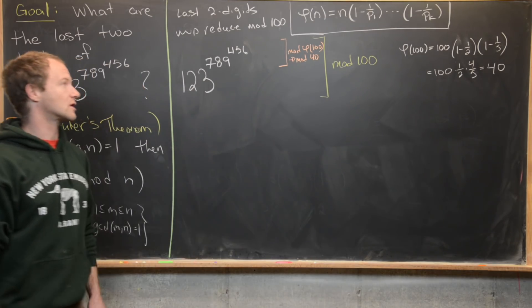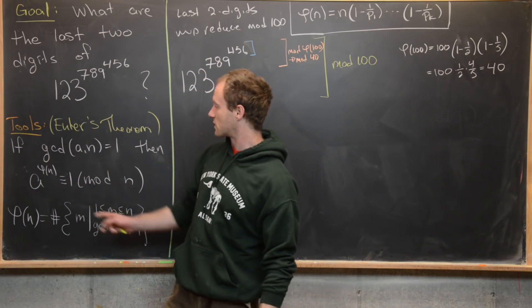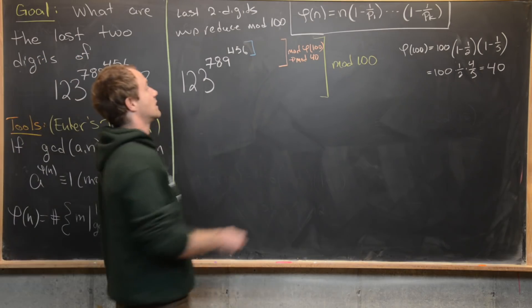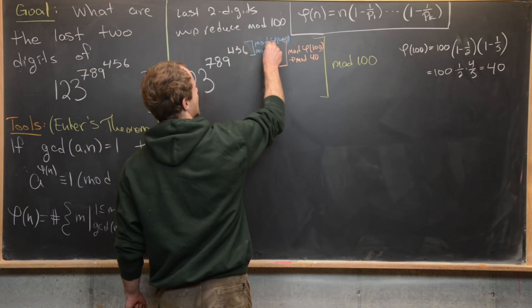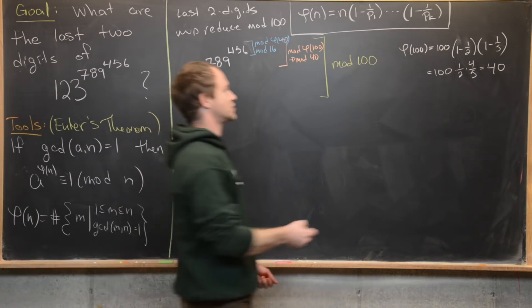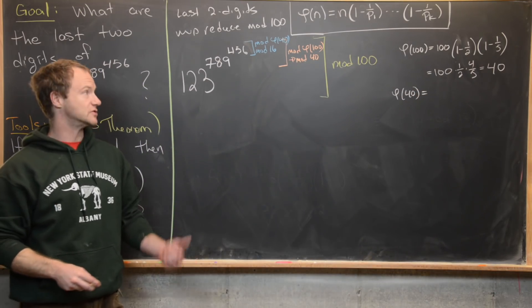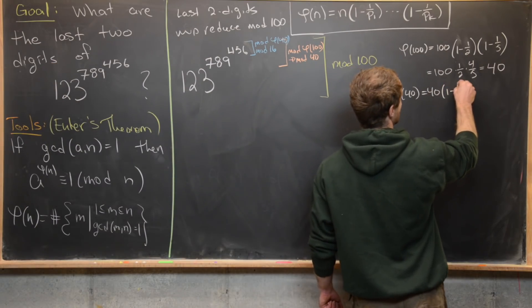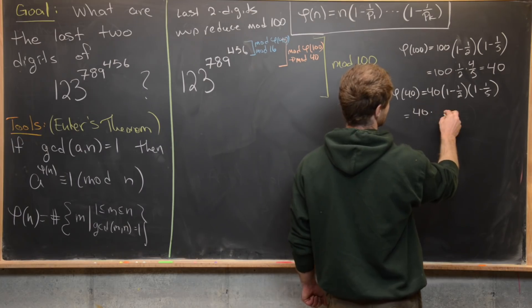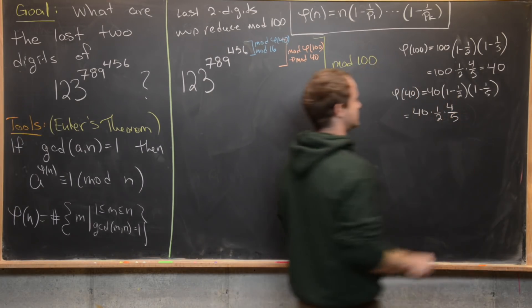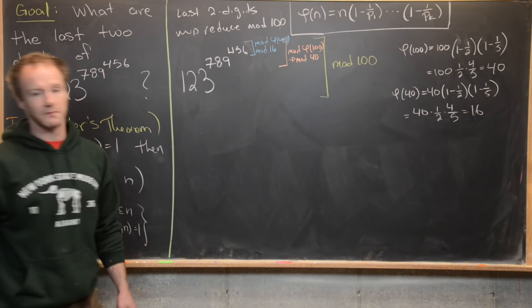But now we've got one more level of exponents here. And this exponent will be working mod phi of 40, just because we've got this Euler's theorem inside Euler's theorem, essentially. So this is going to happen mod phi of 40. And I'll just say that that's going to be 16. So this exponent is working mod 16. Let's maybe go ahead and check that out over here. So we've got phi of 40. So what are the prime factors of 40? They're also just two and five. So we've got 40 times one minus half times one minus a fifth. So again, that's 40 times half times four over five. But notice we've got 40 over 10 is four times four is 16. So that's right, this is working mod 16.